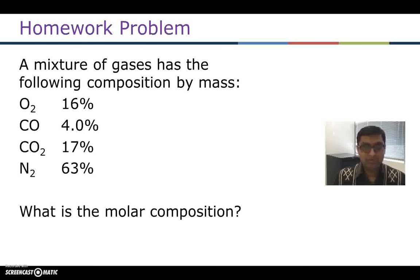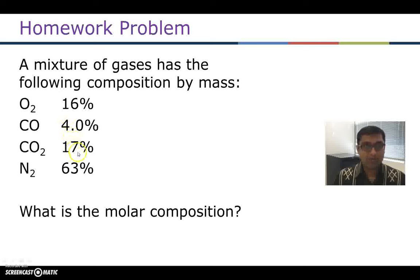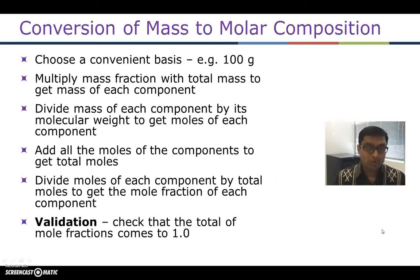I will give you step-by-step instructions just in case you don't have access to the book. Note that the composition adds up to 100%, and naturally to convert to fractions you divide each of those numbers by 100. So oxygen, for example, will become 0.16 as a fraction; carbon monoxide will be 0.04; carbon dioxide will be 0.17; and nitrogen will be 0.63. From there, you need to choose a convenient basis such as 100 or 1, and then multiply the total mass you have chosen as a basis by the mass fractions of each component. That will give you the mass of each component.